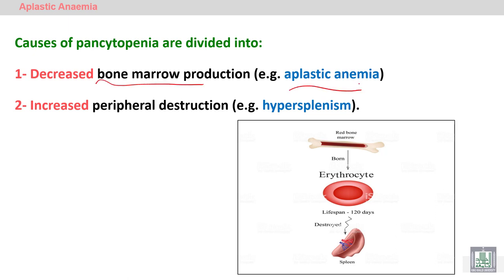There are also other causes for pancytopenia. Megaloblastic anemia is the second cause for pancytopenia, due to ineffective hemopoiesis. The third cause is an increase in peripheral destruction, which occurs in hypersplenism — hyperfunction of the spleen — or any type of hemolytic anemia.